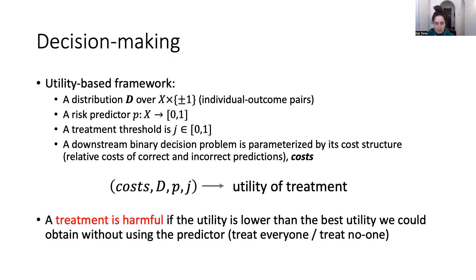We say that the treatment is harmful if the utility actually ends up being lower than the utility you could have obtained without using the predictor at all. Even without any risk prediction, you can always decide to either treat everyone or treat no one, and that gives you some notion of utility. One benchmark is that we don't want to be worse than what these two strategies would obtain — that would be a harmful treatment.